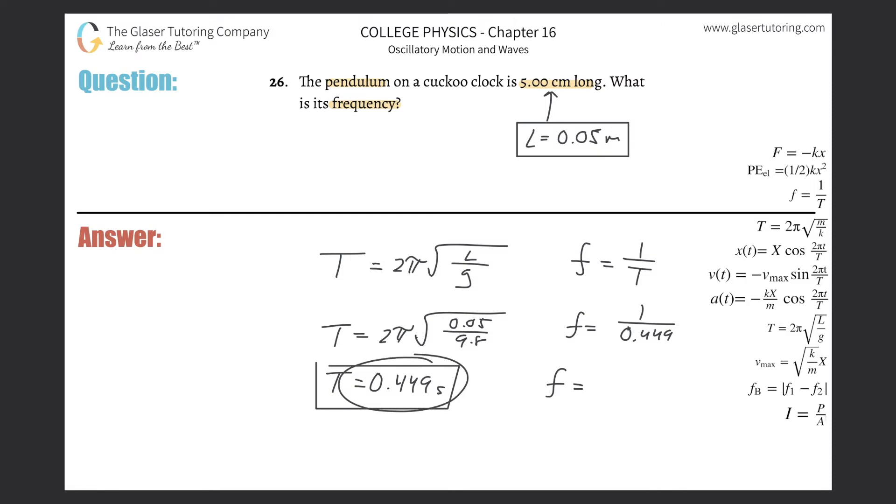For example, if half a second is the time it takes for one full swing, how many swings are there in a full second? You'd say two.